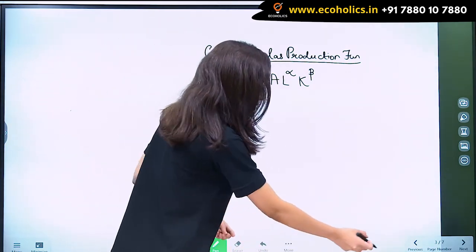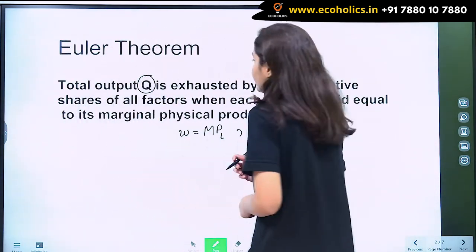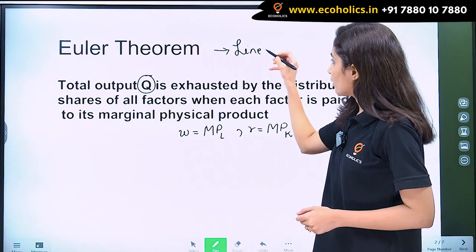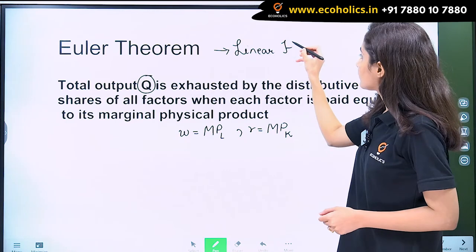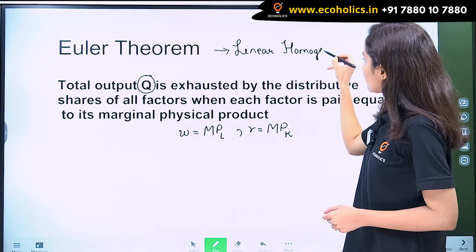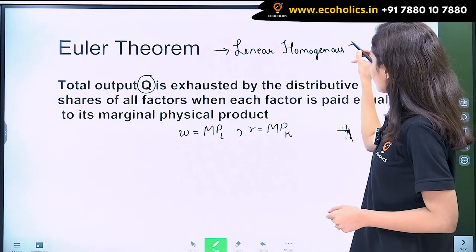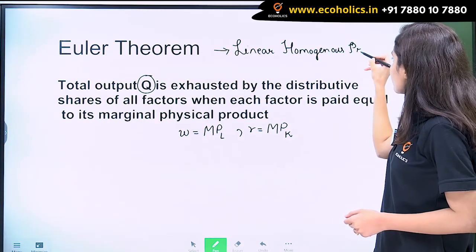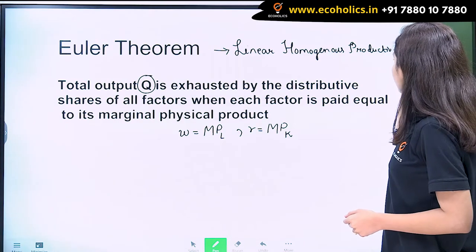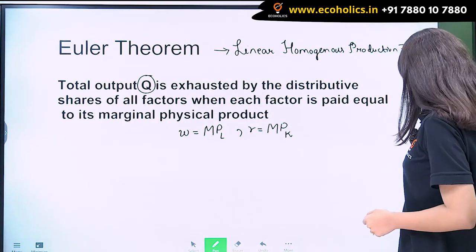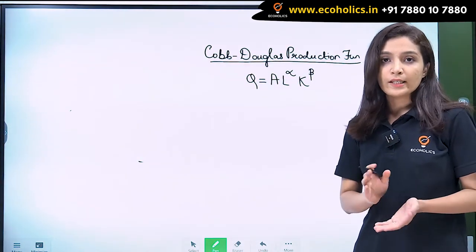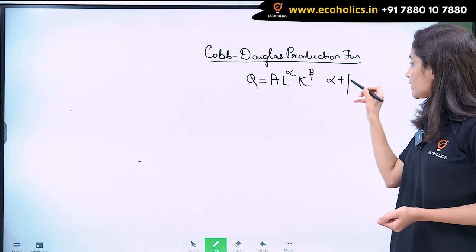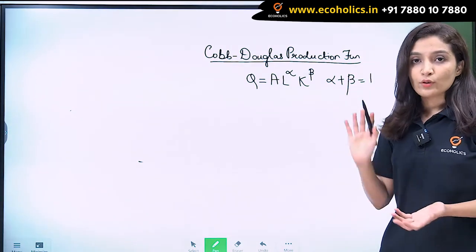Now, what Euler's theorem states is applicable when we have a linear homogeneous production function. In case of the Cobb-Douglas production function, we say that it is a linear homogeneous production function when alpha plus beta is equal to 1. So why is that so?